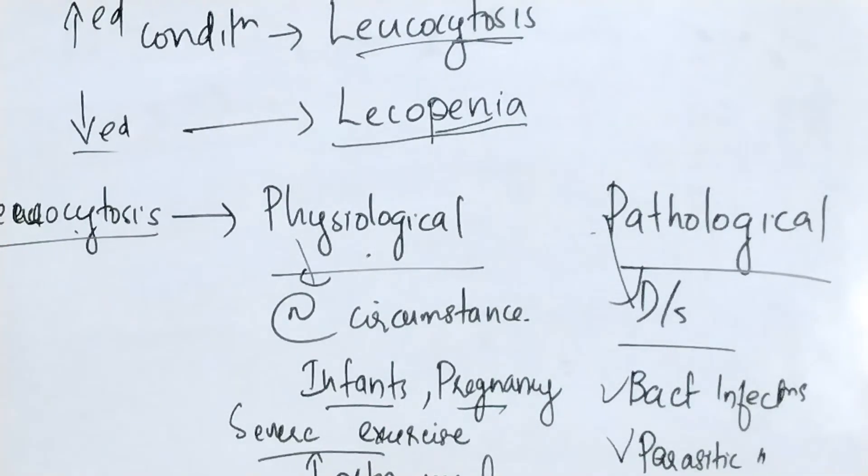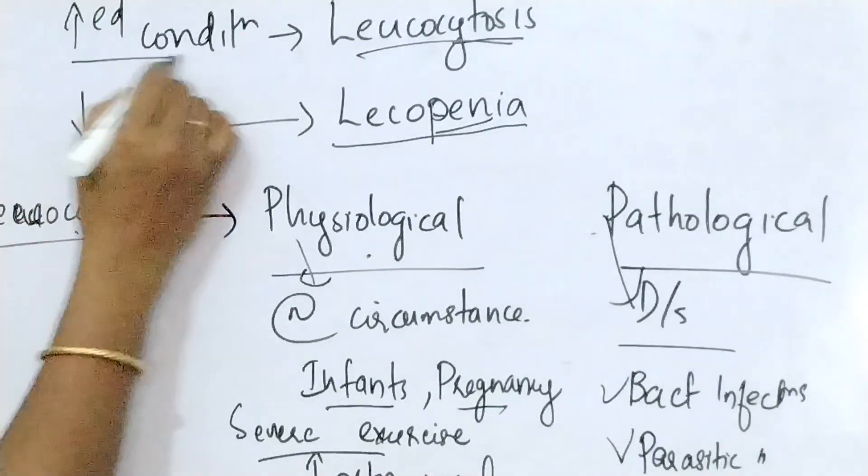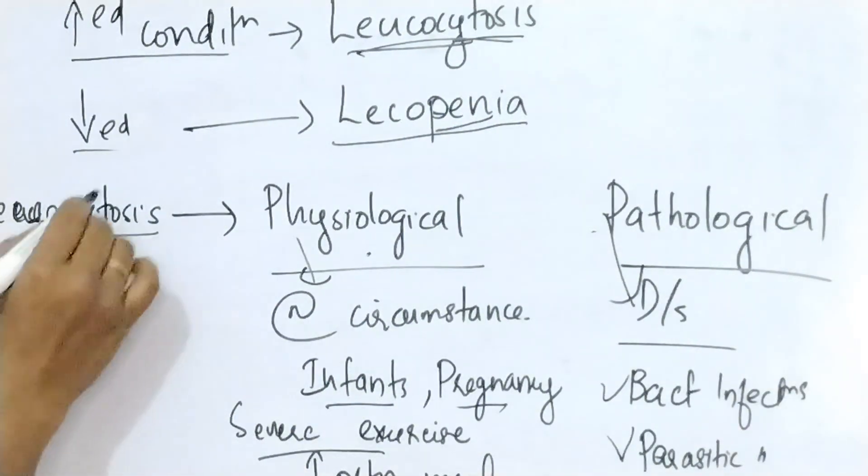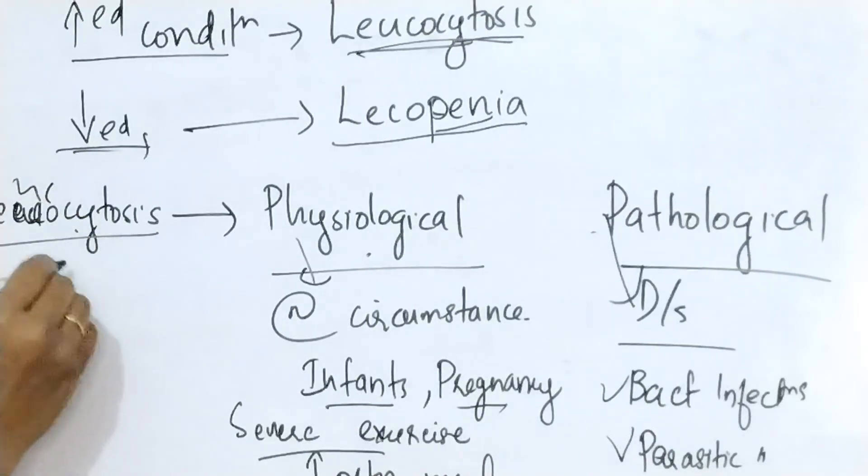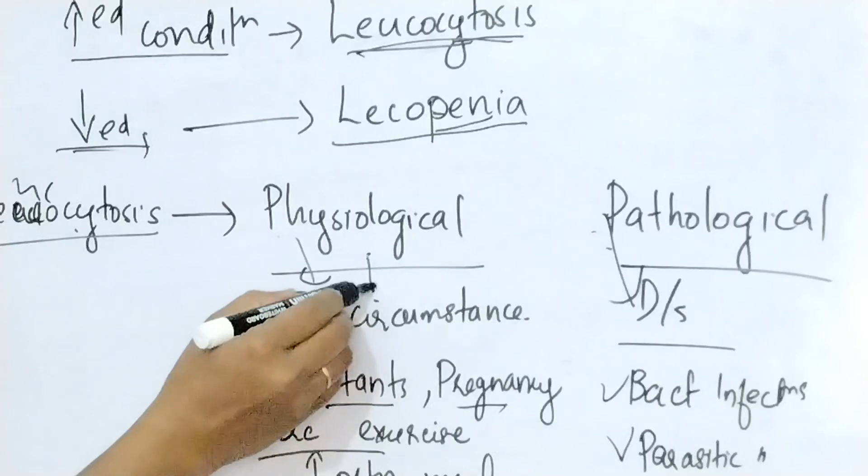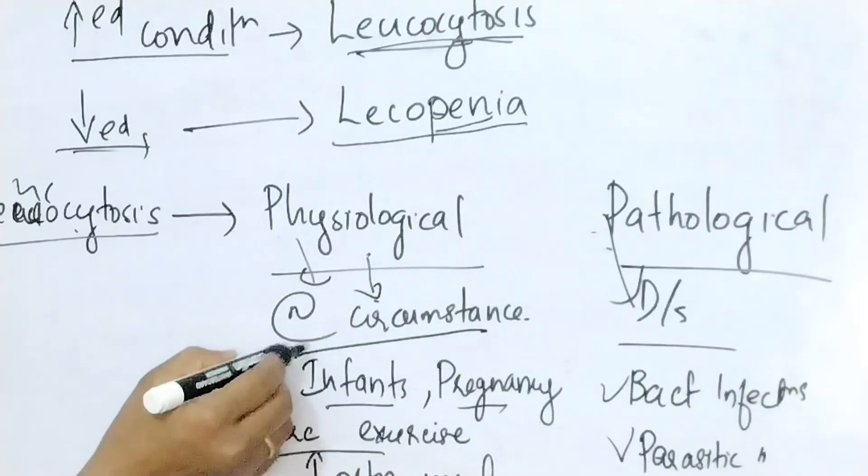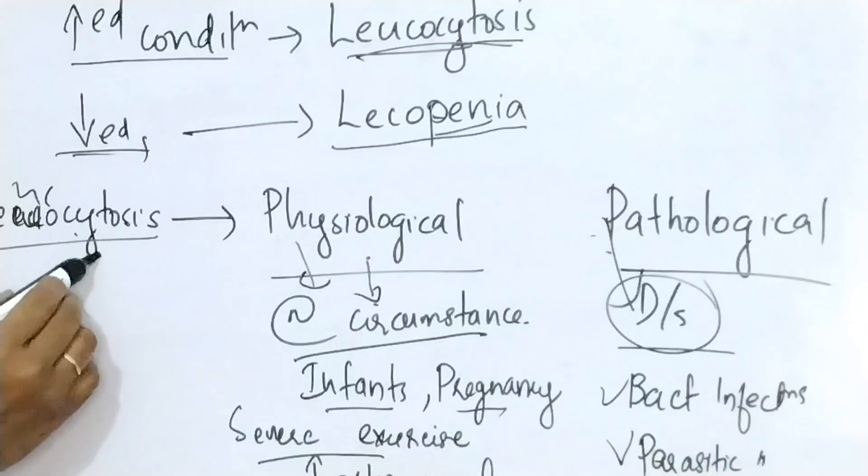Next is about the clinical significance of total cell count. The increased condition is called as leukocytosis and decreased leukocyte count is referred to as leukopenia. The normal total leukocyte count is 5,000 to 11,000 per cubic millimeter of blood. It is of two types: physiological, it is due to normal circumstances, and pathological, it is due to diseases.